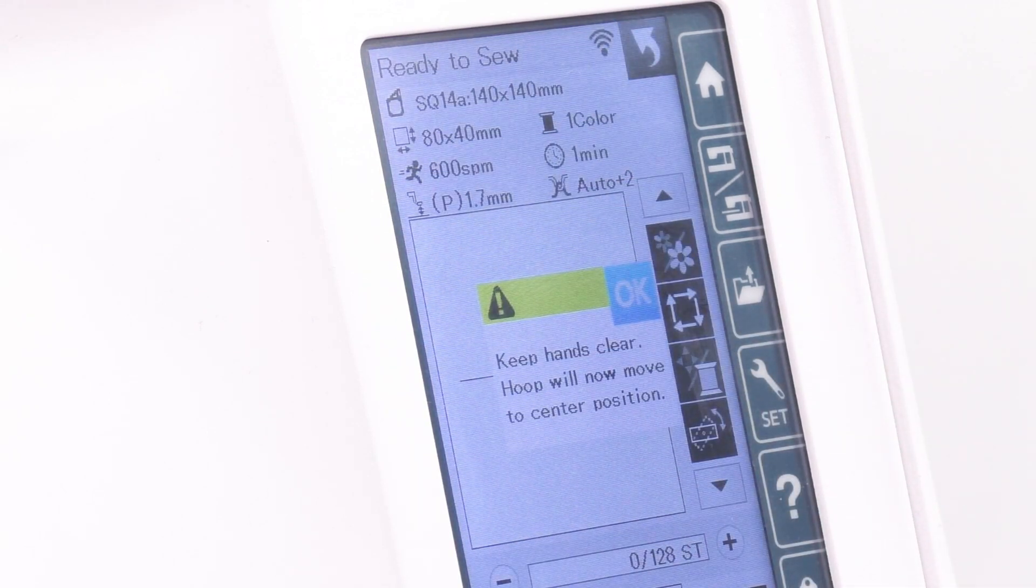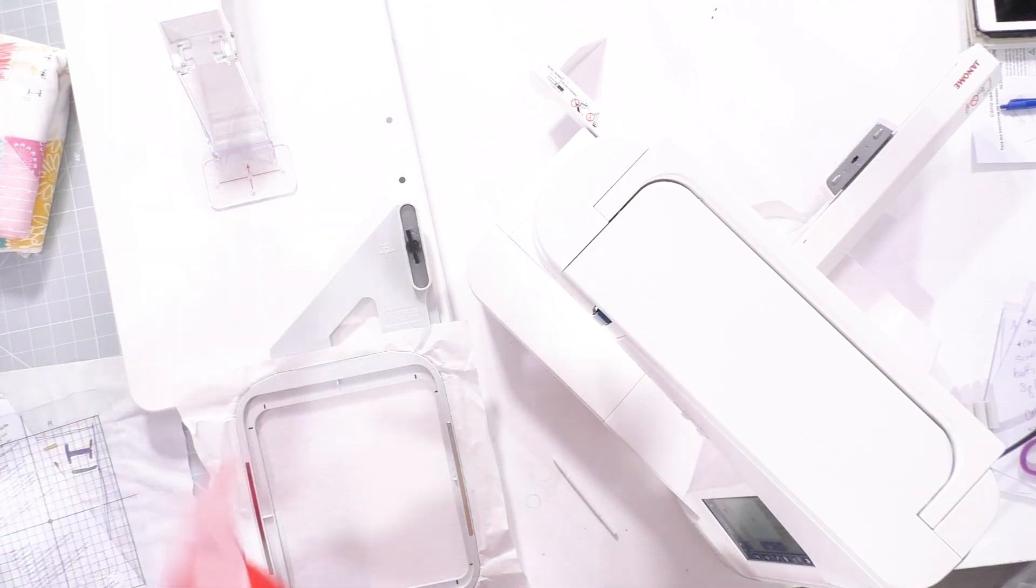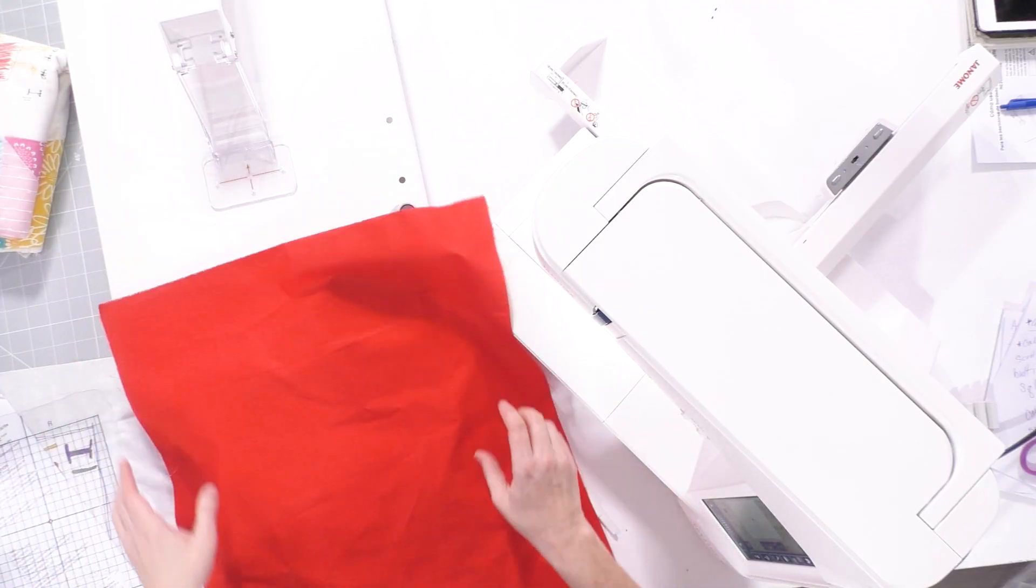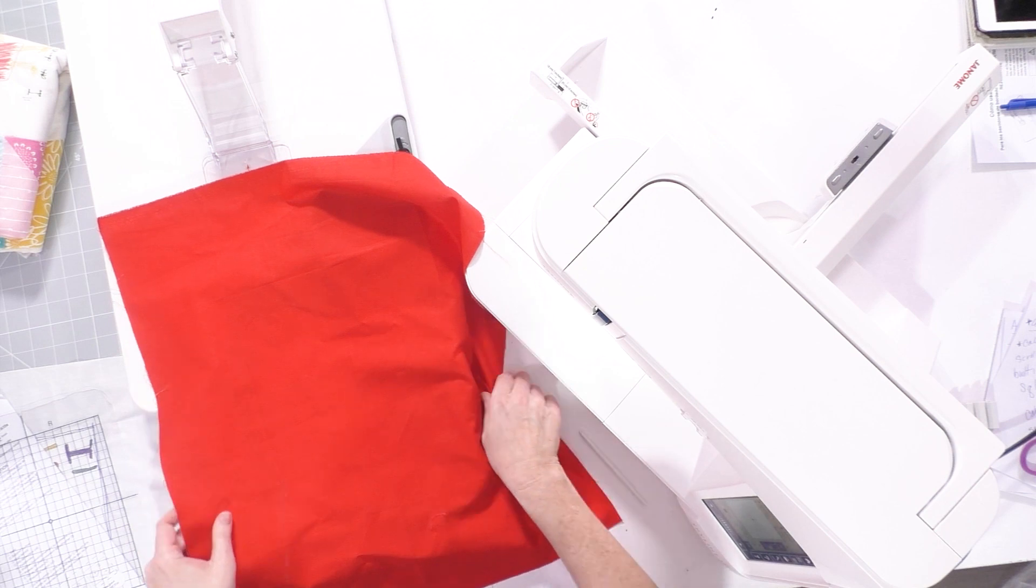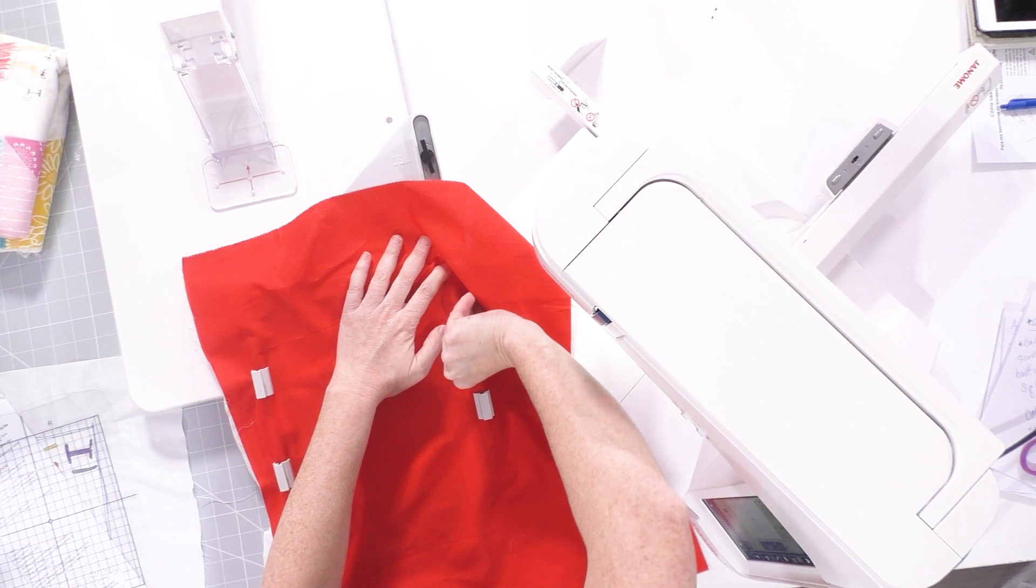I've chosen it, and now it's going to give me this stitch out. I'm just going to lay down some fabric. Just use a scrap piece. Magnetic clips will do. I've just got some tearaway stabilizer on there.